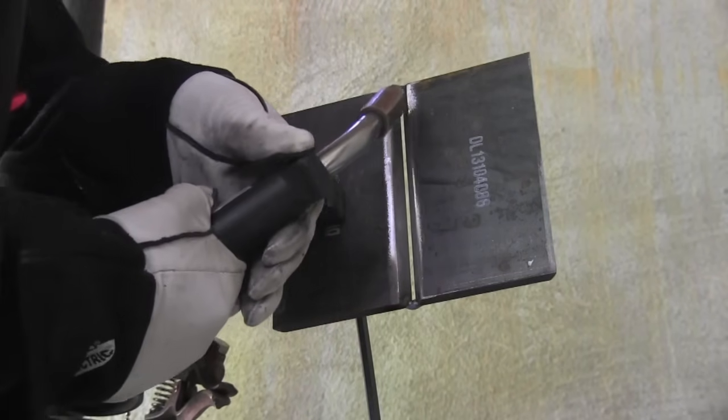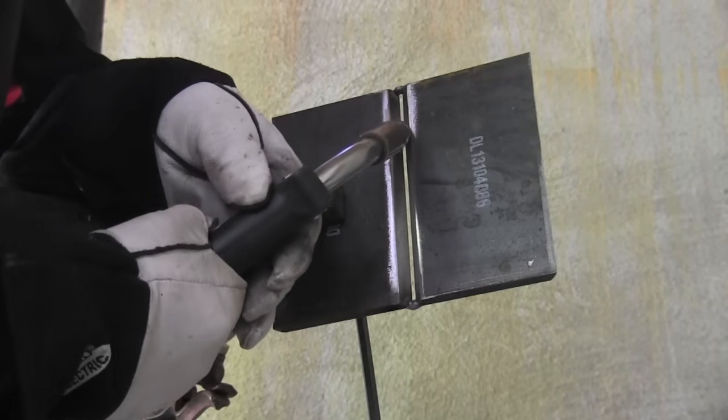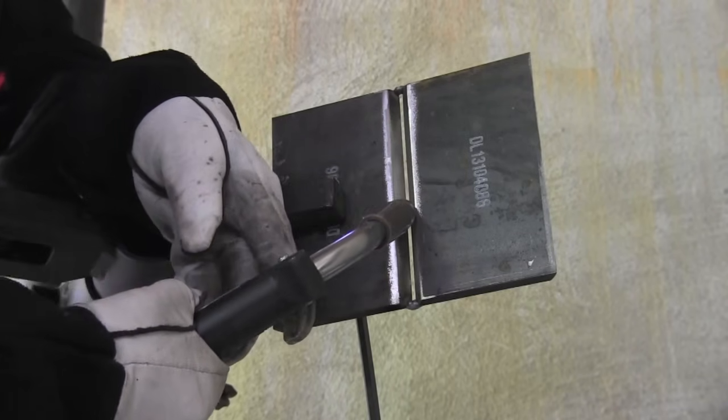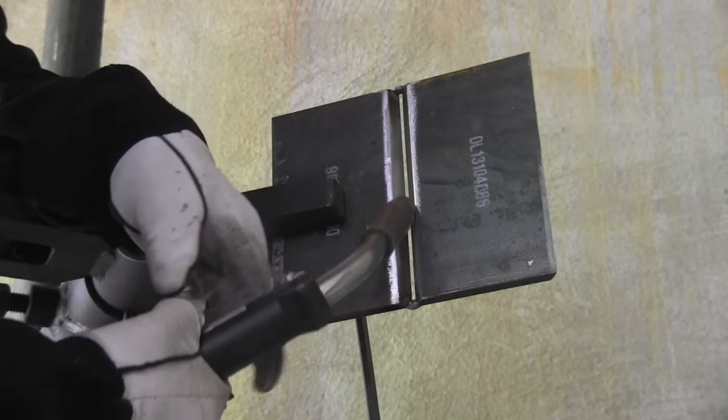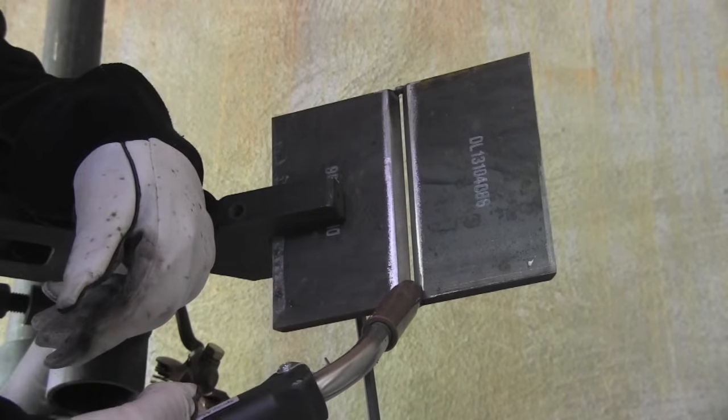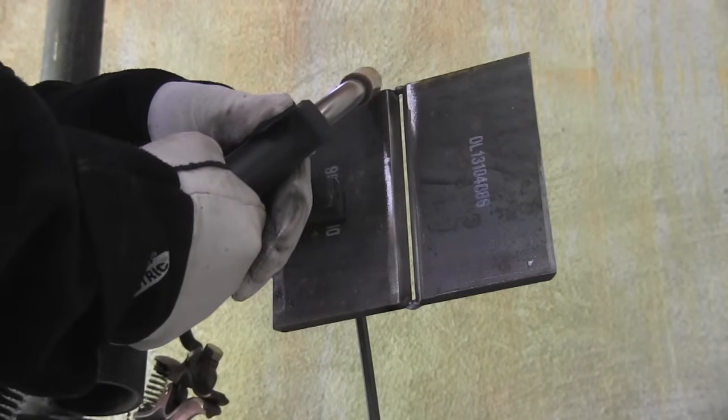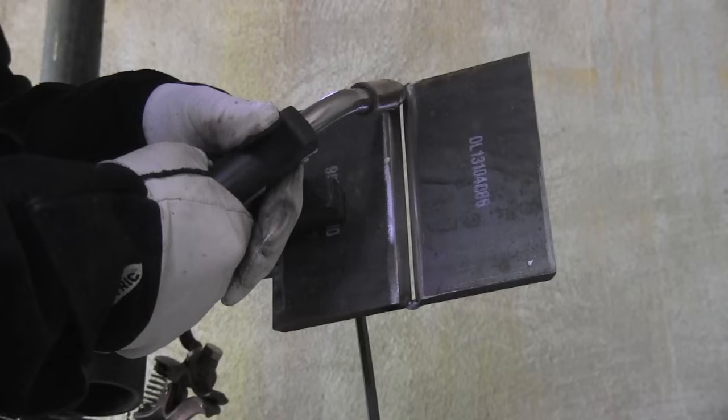As always, I like to take a few dry runs on something like this. Make sure my hand positioning is like it needs to be and I'm not going to get hung up on anything. What you want to do on the downhill route is keep that gun angle pointed up like that. You don't want to twist your wrist where the gun angle changes. You want to keep it pointed up.